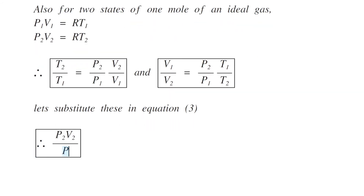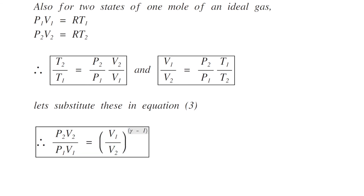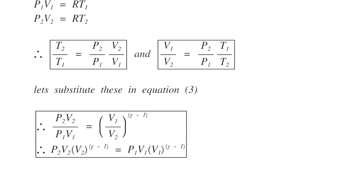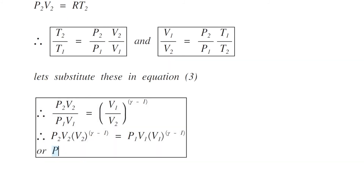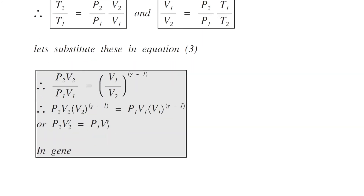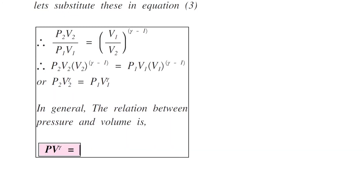Therefore, (P2/P1)(V2/V1) equals (V1/V2)^(gamma minus 1), which gives P2 V2^gamma equals P1 V1^gamma. In general, the relation between pressure and volume in an adiabatic process is P V^gamma equals constant.